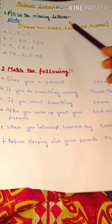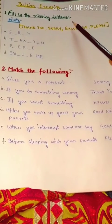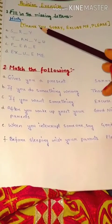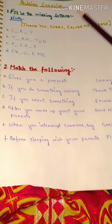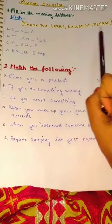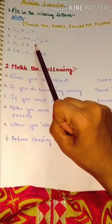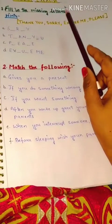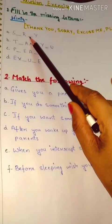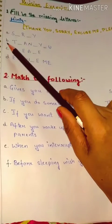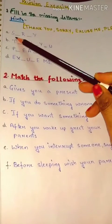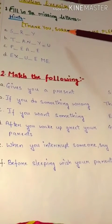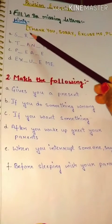Question number one: fill in the missing letters. In this question you have to fill the missing letters. Hints are also given, so you can take help from the hint box. For number A, let's see — two letters are missing. The word starts with letter S and ends with letter Y. Write the missing letters in the two blanks.